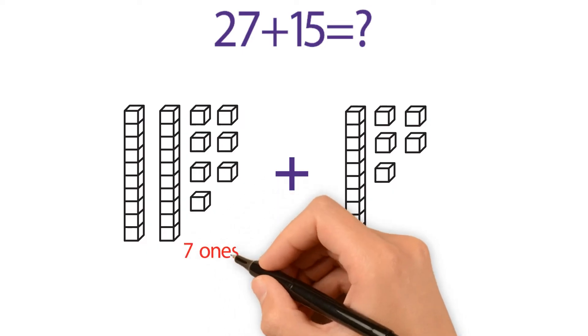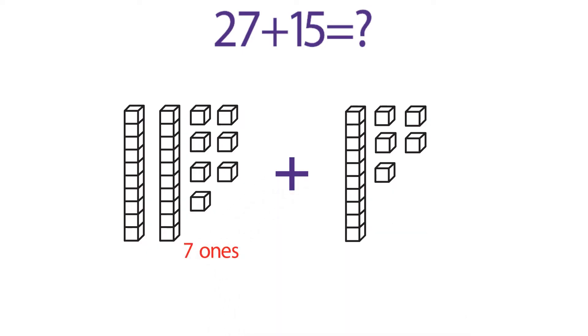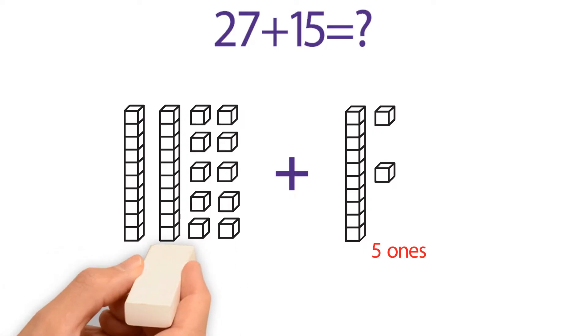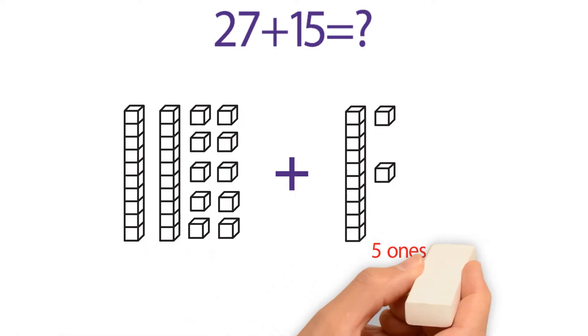27 has seven ones while 15 has five ones. We transfer the ones from the smaller digit to make a ten. So 27 becomes 30 and 15 becomes 12.